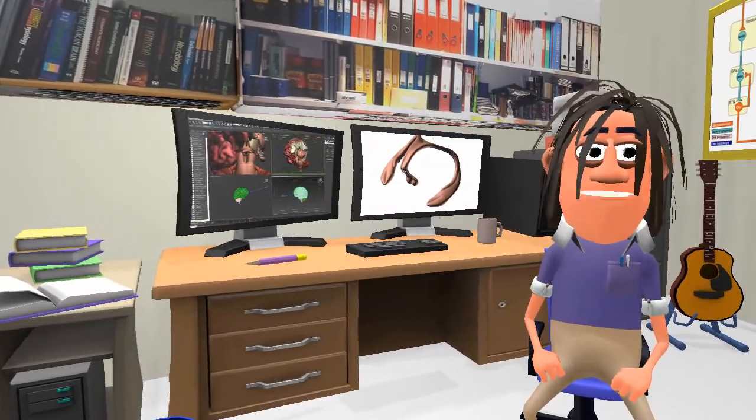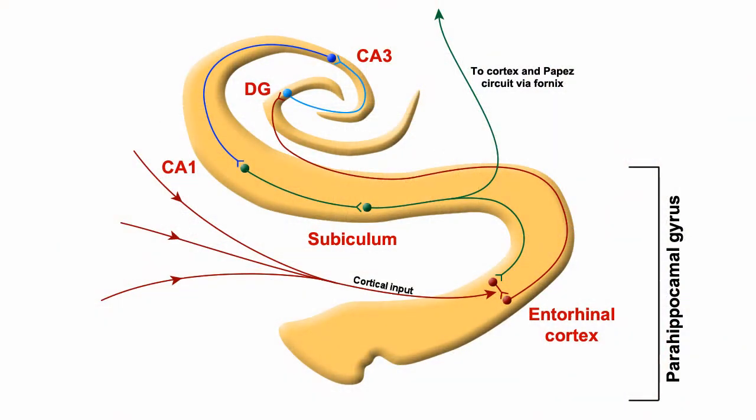The hippocampus receives input from cortical segments of the adjacent parahippocampal gyrus, namely the entorhinal cortex. Afferent projections from the entorhinal cortex synapse on the granule cells of the dentate gyrus via the perforant path. Axons of the granule cells project to pyramidal neurons in the CA3 subfield, forming the mossy fiber pathway.